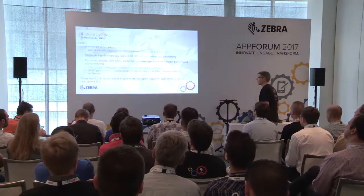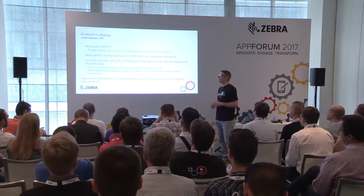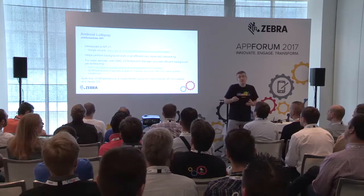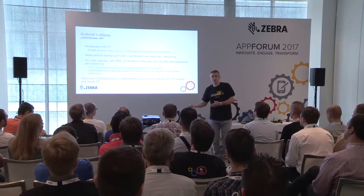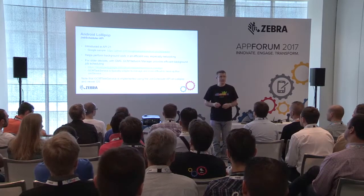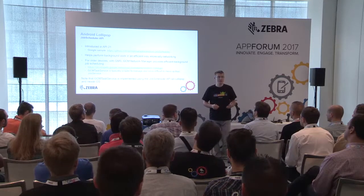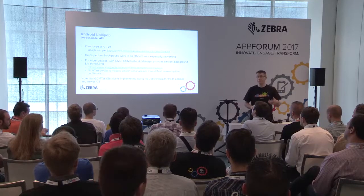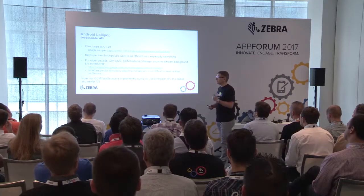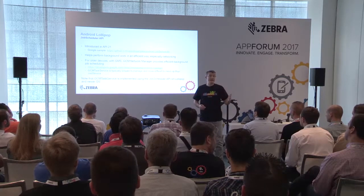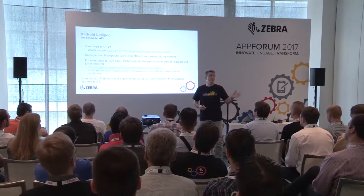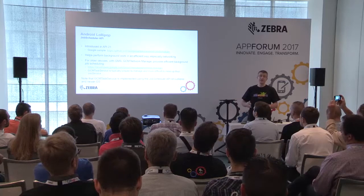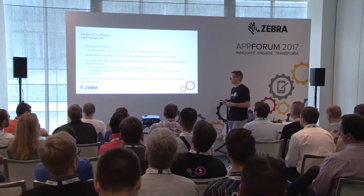Starting from Android Lollipop, one of the interesting changes is the Job Scheduler API. You don't have to use it — it's not mandatory — but it's very useful if you expect your application to do activities periodically on the device. Previously you could have an alarm going off calling your application when it's in the background. It works on Lollipop and KitKat, but over time there are more and more constraints on this kind of behavior.